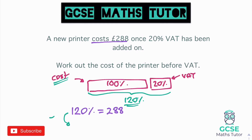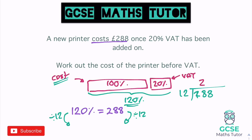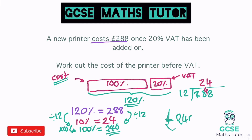So dividing 288 by 12: 12 goes into 28 twice up to 24, remainder 4, then goes into 48 four times. So £24 is our 10%. Then nice and easy — just like the rest of these questions — we times by 10 to get 100%. So 100% equals £240. So our final answer is £240, making sure we write that with a pound sign.